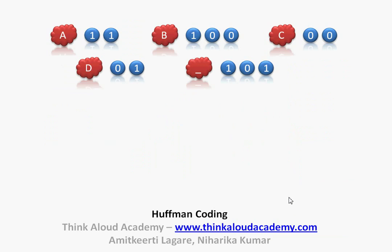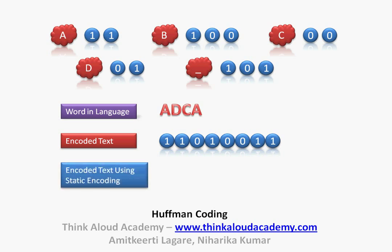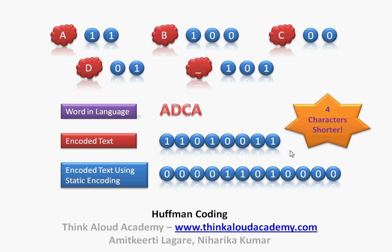These are the codes generated using the Huffman tree. Now if I re-encode the word A, D, C, and A using these new coding schemes, then A would be 11, D would be 01, C would be 00, and A again would be 11. Comparing this to the static encoding — where A was 000, D was 011, C was 010, and A was 000 — using Huffman coding I am actually able to save 4 bits in this particular string of encoded data.